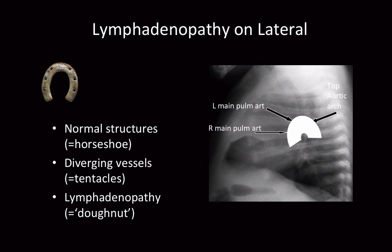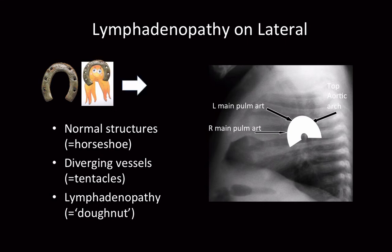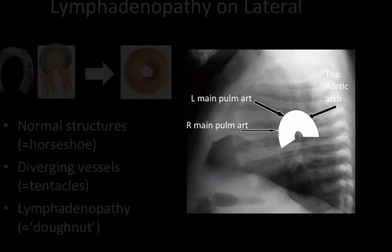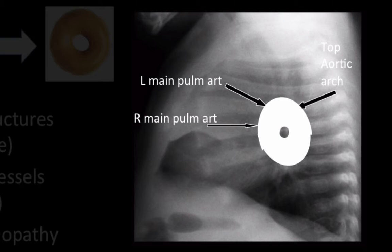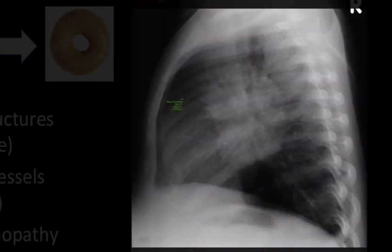For those of you who don't know what a horseshoe is — it's a metallic structure used on a horse's hoof. I've put in an octopus because the vessels extending below the horseshoe look like tentacles — they basically diverge in all directions including in and out of the page. The lymphadenopathy you will see on a lateral x-ray simplistically looks like a donut. That's what the donut sign looks like on a lateral chest radiograph.